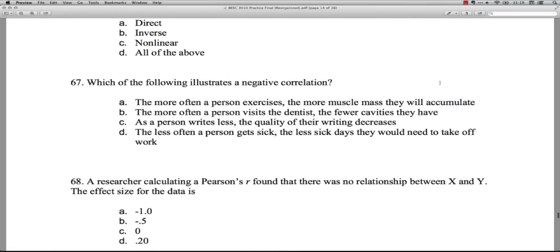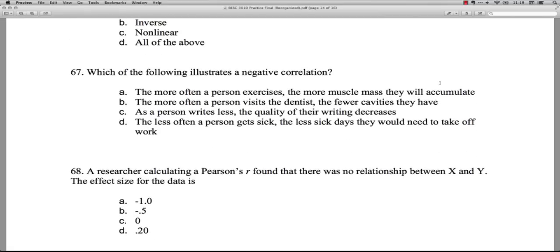Question 67: Which of the following illustrates a negative correlation? So we're looking where when a person is high on one variable, they become lower on the other. Similarly, if they're low on one, they're higher on the other. Here we have the more often a person exercises, the more muscle mass they will accumulate. Well, that's high on both. So that's a positive correlation. B, the more often a person visits the dentist, the fewer cavities they have. Well, more visits, fewer cavities. That is a negative correlation. So B is correct.